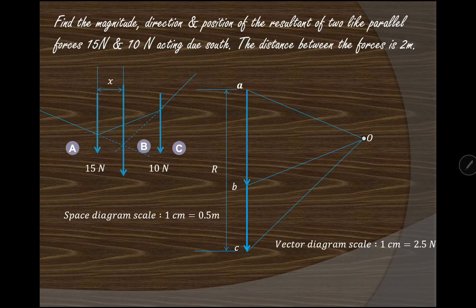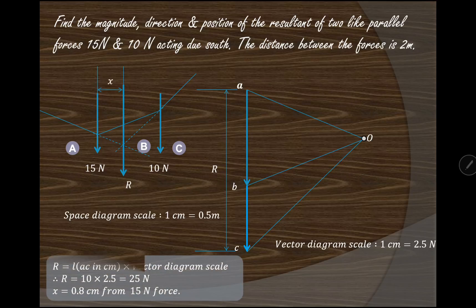We now find the magnitude and position of the resultant. R is given by length AC multiplied by the vector diagram scale of 2.5. Since AB is 6 cm and BC is 4 cm, AC is 10 cm, giving R = 10 × 2.5 = 25 Newton. The measured distance x is 1.6 centimeters; multiplying by the space diagram scale of 0.5 gives x = 0.8 meters from the 15 Newton force.